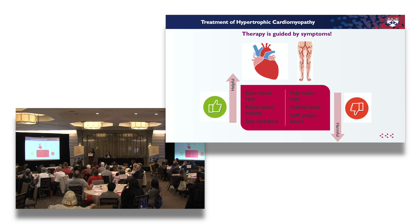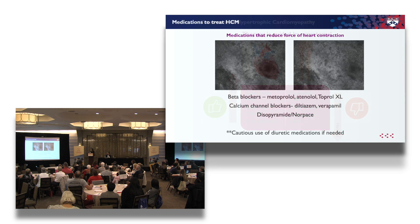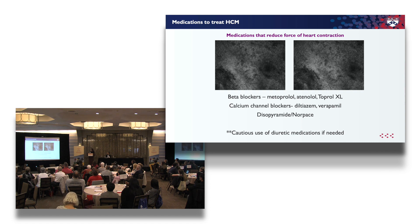With HCM it's helpful to have a slow heart rate, to relax your heart muscle, and to stay hydrated so your heart is full and can eject blood more efficiently. It's harmful to be dehydrated, have an empty heart, or a fast heart rate. We use medications to slow your heart rate — such as metoprolol, atenolol, and Toprol XL — as well as calcium channel blockers like diltiazem and verapamil. Diuretics have to be used carefully in patients with HCM.